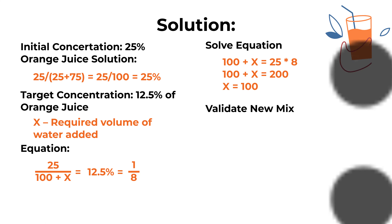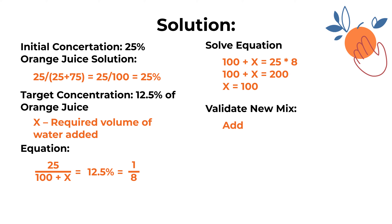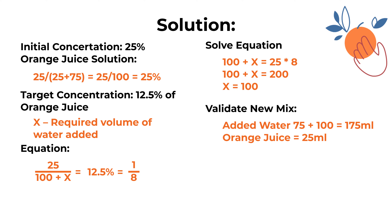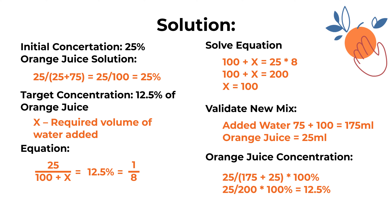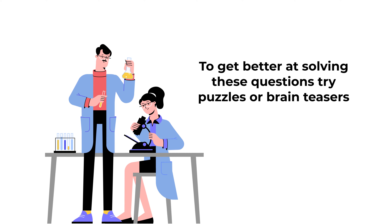Let's validate: adding 100 mL to the existing 75 mL gives 175 mL of water total. Orange juice remains at 25 mL. New concentration = 25/(175 + 25) × 100% = 25/200 × 100% = 12.5%. The correct choice is B, 100 milliliters.